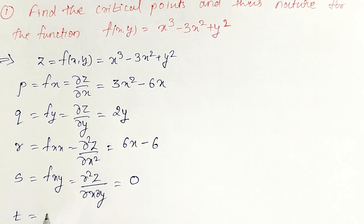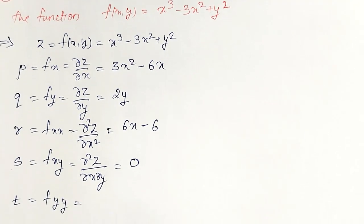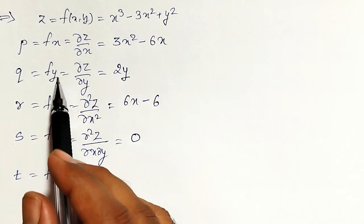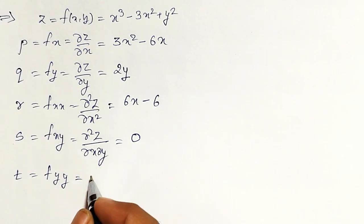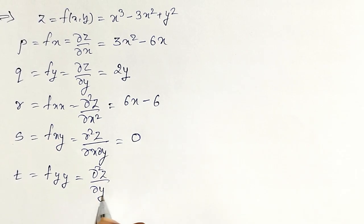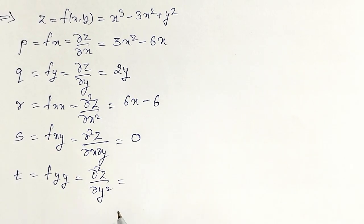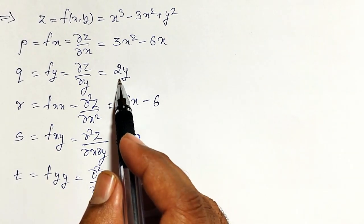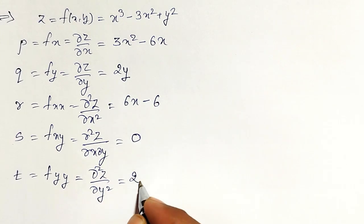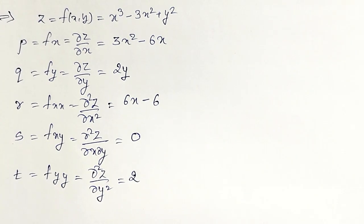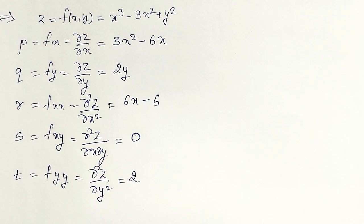Like that, t equal to fyy. Partial derivative of fy with respect to y again or partial square z by partial y square. This one with respect to y again will become 2. These are my all five partial derivatives.